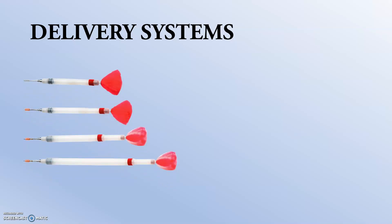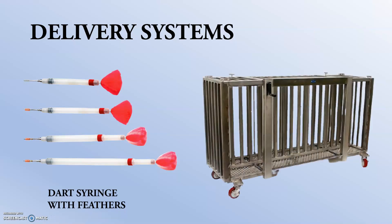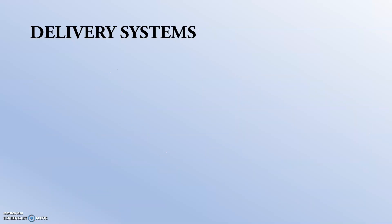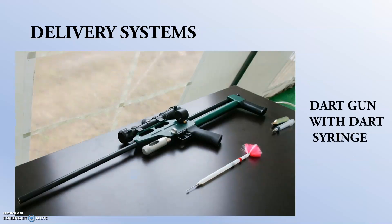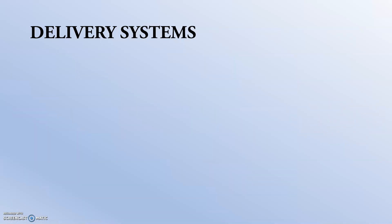Moving to the drug delivery systems: these are the darting syringes with feathers, the squeeze cage, and the dart gun with dart syringe used for darting. The drug is loaded into the syringe, connected with the barrel, aimed at the animal, and fired.